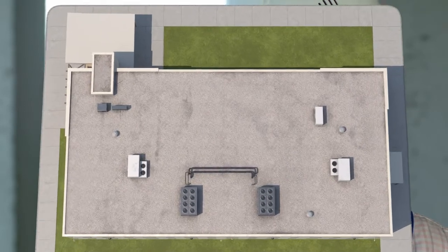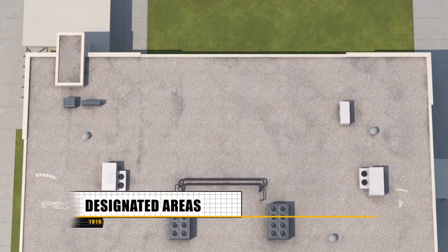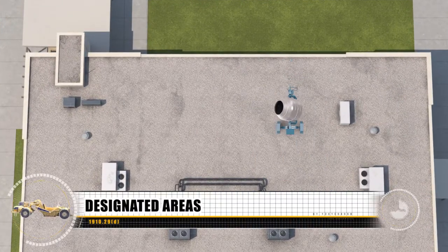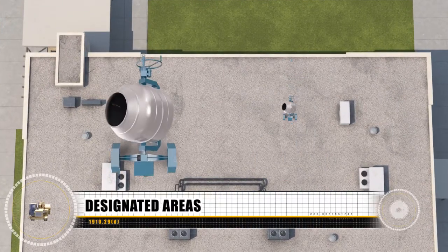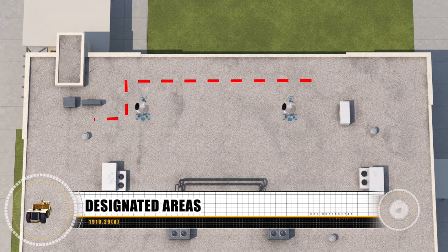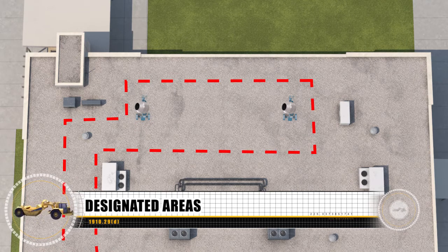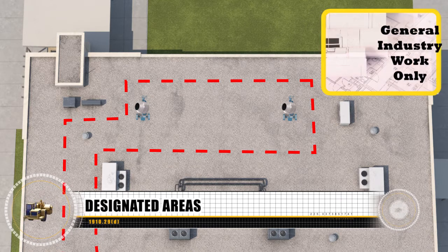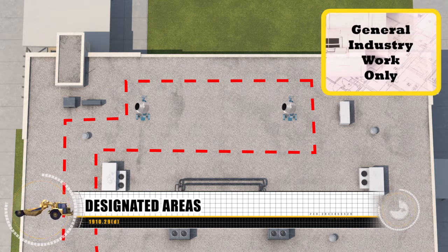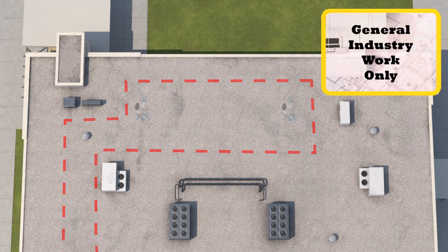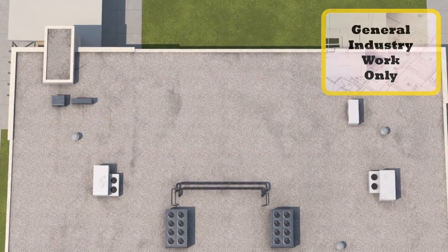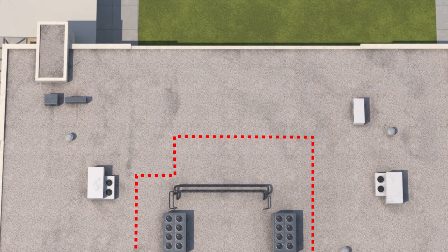For general industry work on low-sloped roofs, the employer may use designated areas. These areas must be marked with a warning line. For temporary or infrequent work, the barrier must be erected no less than six feet from the unprotected edge. For other work, the barrier must be at least 15 feet from the unprotected edge.